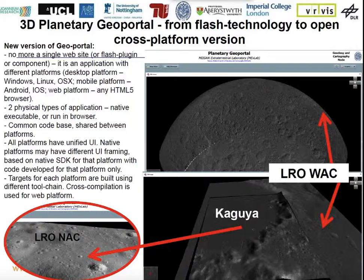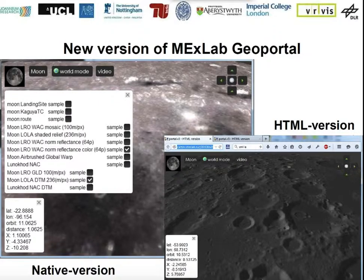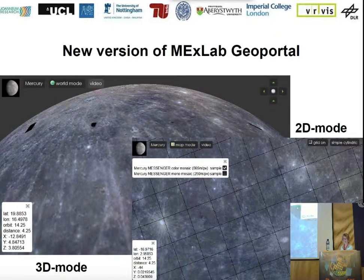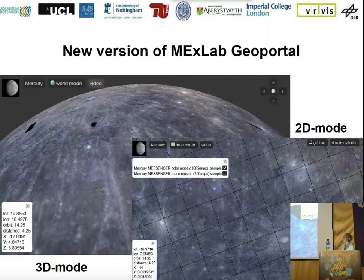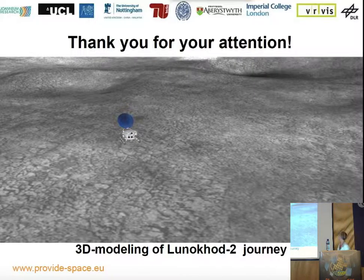Unfortunately, because this area is lunar maria, you cannot easily see the 3D model, but it is rendered in 3D. Here are some examples of the new version — lunar data in native version and HTML version, also using wide-angle camera data. This is for Mercury. As you can see, there are two viewing modes: S3D mode and map mode with grid, and S2D mode. This is the result of 3D modeling of Lunokhod 2 using Macam REST.